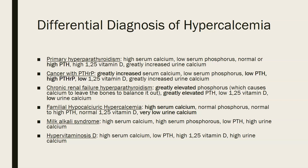Familial hypocalciuric hypercalcemia — as the name suggests — shows low urine calcium and high serum calcium, normal serum phosphorus, normal to high PTH, normal 1,25-hydroxyvitamin D, and very low urine calcium. In milk-alkali syndrome, where patients consume excessive dairy products and alkaline agents like baking soda, you see high serum calcium, high serum phosphorus — which is unusual — low PTH, and high urine calcium due to the high calcium intake and absorption.